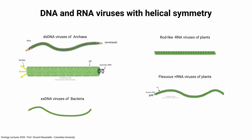Both DNA and RNA viruses have helical symmetry. Here's a selection: viruses of archaea — double-stranded DNA viruses of the third domain of life. These have helical nucleocapsids and are enveloped as well. Another double-stranded DNA virus of archaea looks different — it's naked and has tail fibers to attach to the archaeal host. There are viruses of bacteria with helical symmetry and single-stranded DNA. For RNA viruses, there are rod-like viruses like tobacco mosaic virus, negative-strand viruses. And there are flexuous plus-strand RNA viruses of plants — also with helical symmetry but not rigid like TMV. Quite a variety of helical symmetries.